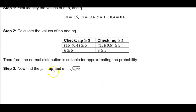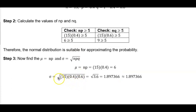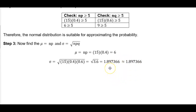Now we want to find the mean, which is equal to n times p, and the standard deviation, which is equal to the square root of n times p times q. So the mean is equal to 15 times 0.4, which equals 6. And the standard deviation is equal to the square root of 15 times 0.4 times 0.6, which is 3.6. The square root of 3.6 is equal to 1.897366. Sometimes the textbook rounds to three decimal places, but I like to use six to avoid errors in later calculations.